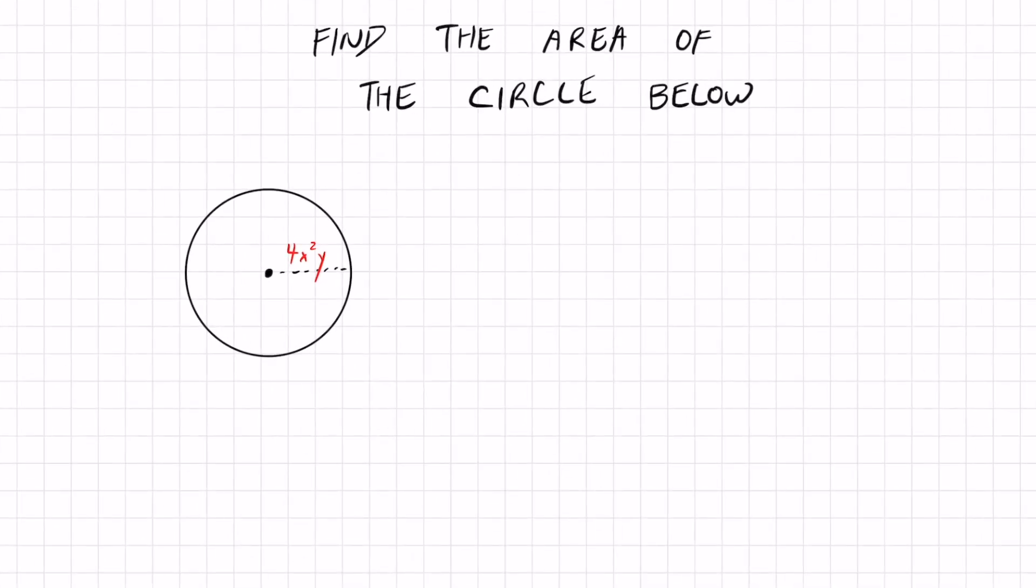And finally we get to the circle. The area for a circle is pi r squared, radius squared. And we're given the radius in the picture. 4x squared y. Substitute everything you have. Pi is just pi. The radius is given as 4x squared y.